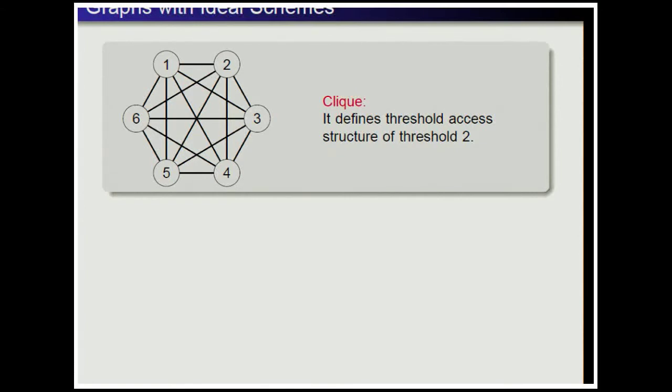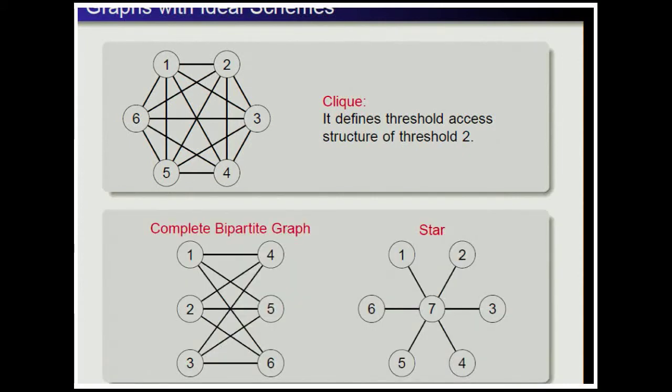Some special graphs admit ideal schemes. A clique is a graph in which every pair of vertices is an edge, and it defines a threshold access structure of threshold 2, so it can be realized by the Shamir secret sharing scheme. Complete bipartite graphs also admit ideal schemes, and stars — a particular case of complete bipartite graphs — also admit ideal schemes.